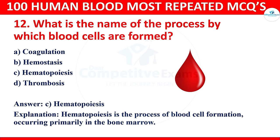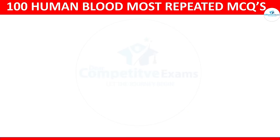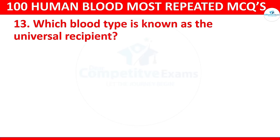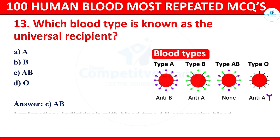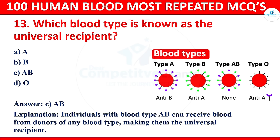Question 13: Which blood type is known as the universal recipient? Options: A, B, AB, or O. The correct answer is AB. Individuals with blood type AB can receive blood from donors of any blood type, making them the universal recipient.